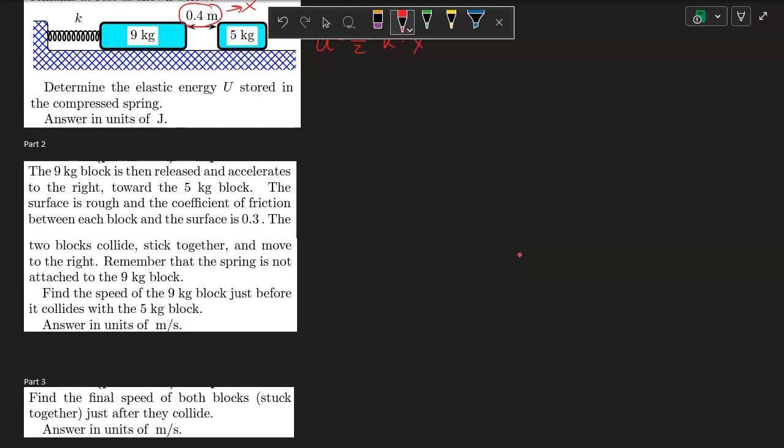So the potential energy of the spring minus the work done by friction as the block is displaced will equal the KE final minus KE initial for the block. The block is initially at rest, so this goes away.